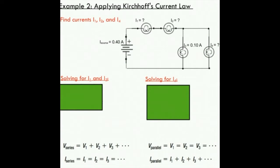So another example, this time applying Kirchhoff's current law. We're looking for currents I1, I2, and I4 in this schematic diagram. This is the same circuit as the first example, but this time we're looking at current instead of voltage.